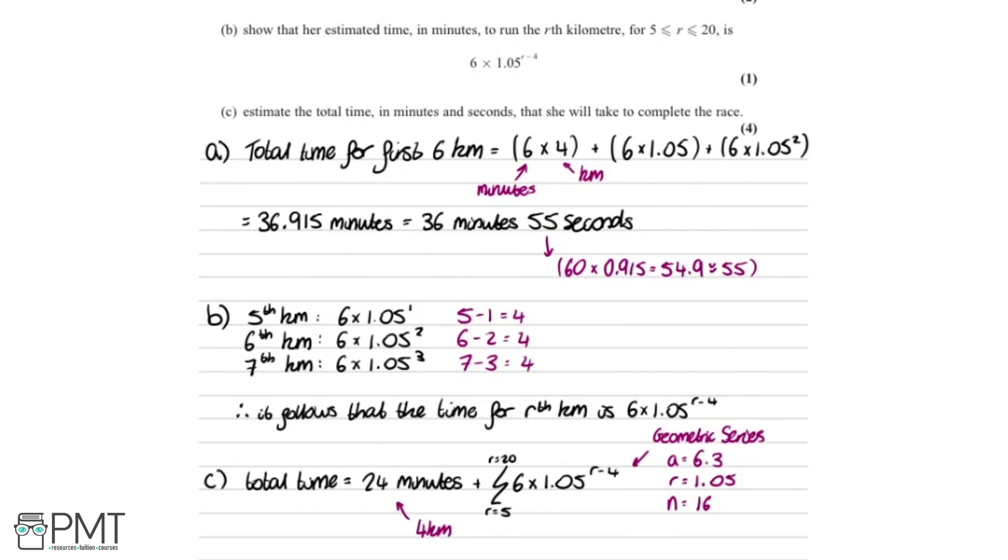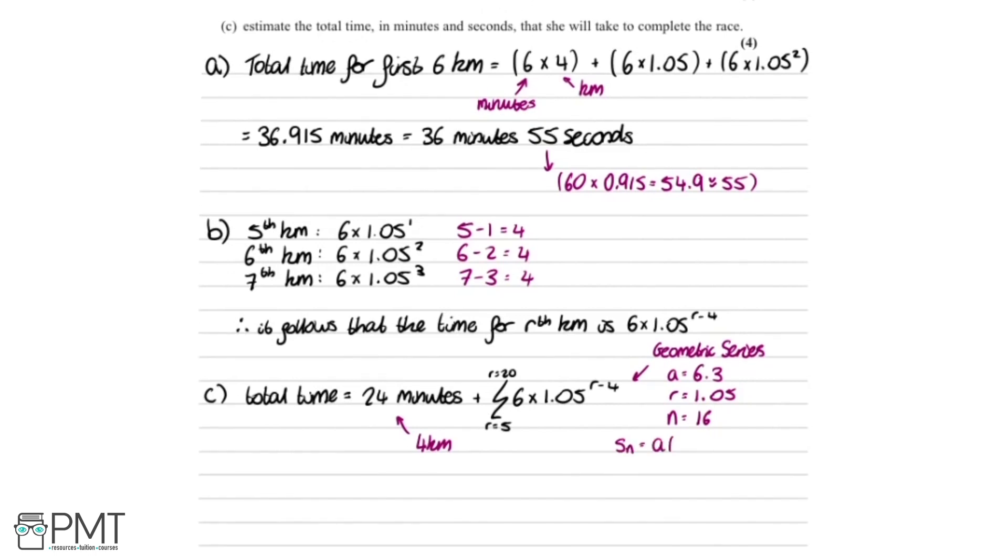And then we can evaluate this using a formula from the formula booklet. It says the sum is a multiplied by 1 minus r to the power of n, all over 1 minus r. So doing that, we get that the total time equals 24 minutes plus 6.3 multiplied by 1 minus 1.05 to the power of 16, all over 1 minus 1.05, which equals 173.042 minutes. That equals 173 minutes and 3 seconds. Just like earlier, we worked that out by doing 60 multiplied by 0.042 and rounding to the nearest second.